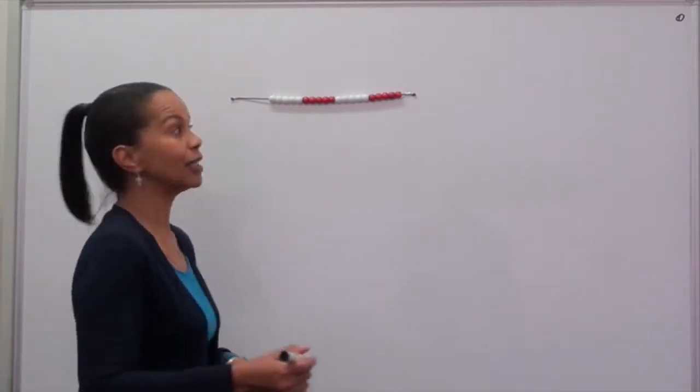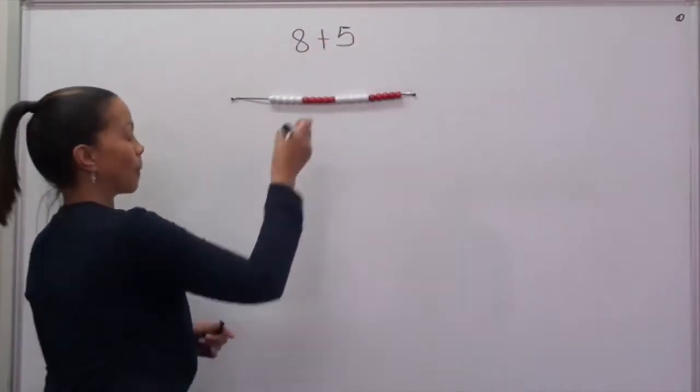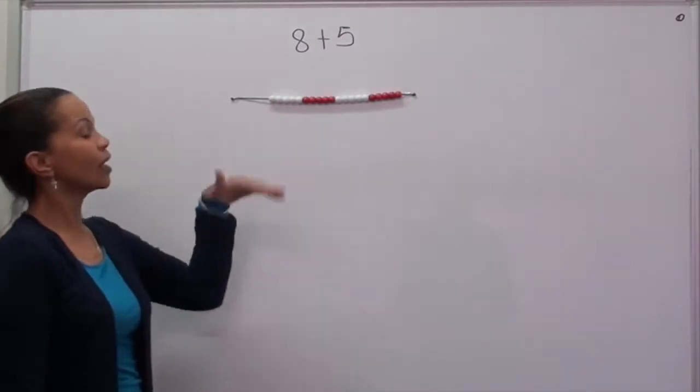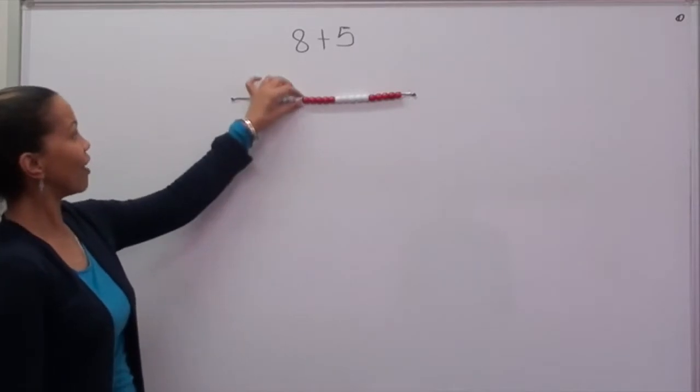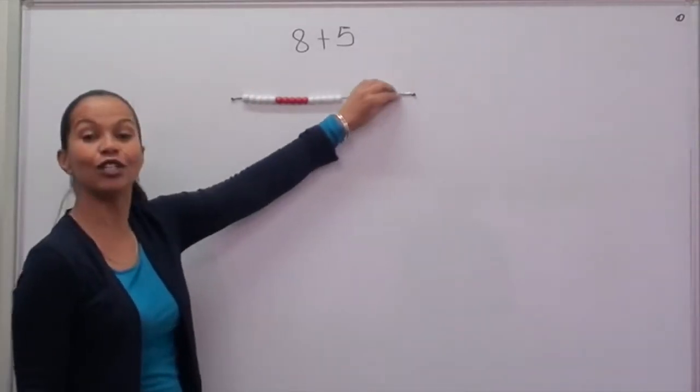So the example is 8 plus 5. I'm going to start with my bead string. Remember that my bead string has 20 beads. They are 5, 10, 15, 20.